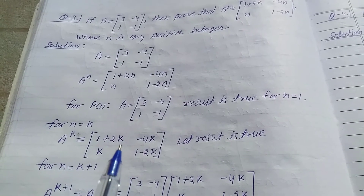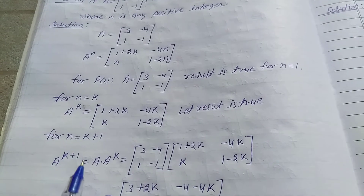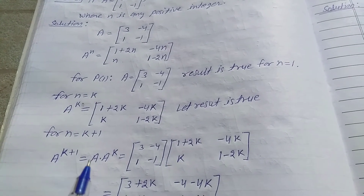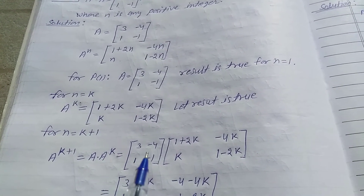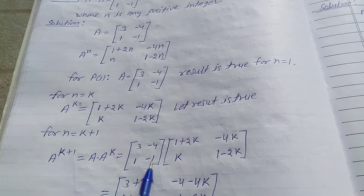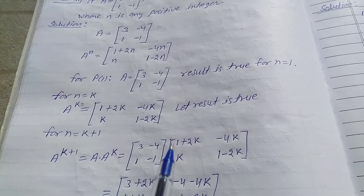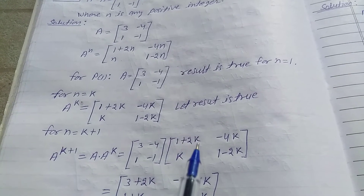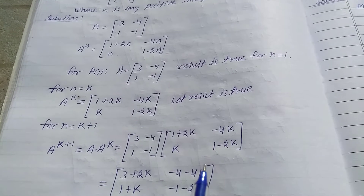Now replace K and for N equal to K+1, A power K+1 is equal to A power K multiplied by A. So A power K is matrix [[1+2K, -4K], [K, 1-2K]] and matrix A is [[3, -4], [1, -1]].